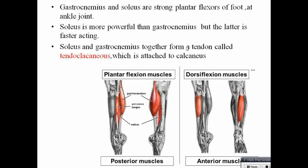Soleus and gastrocnemius together form a tendon called tendo calcaneus, which is attached to the calcaneus. Both muscles form a common tendon inserted to the calcaneus — that is called the Tendon of Achilles, also called tendo calcaneus. This is an important tendon that can be asked in exams.